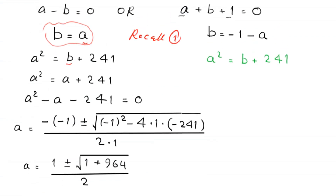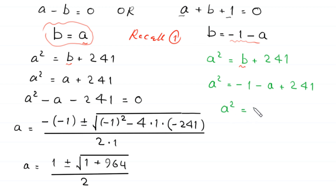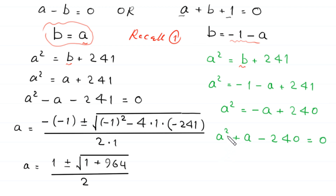Now we solve the second case. We replace b with negative 1 minus a in equation 1: a squared equals negative 1 minus a plus 241. Simplifying, a squared equals negative a plus 240. Moving terms to the left-hand side gives a squared plus a minus 240 equals 0. This quadratic equation is factorable. We split the middle term as negative 15a plus 16a, giving a squared minus 15a plus 16a minus 240 equals 0.